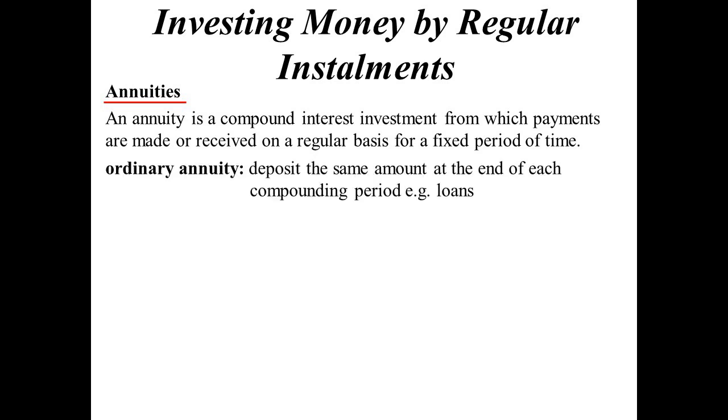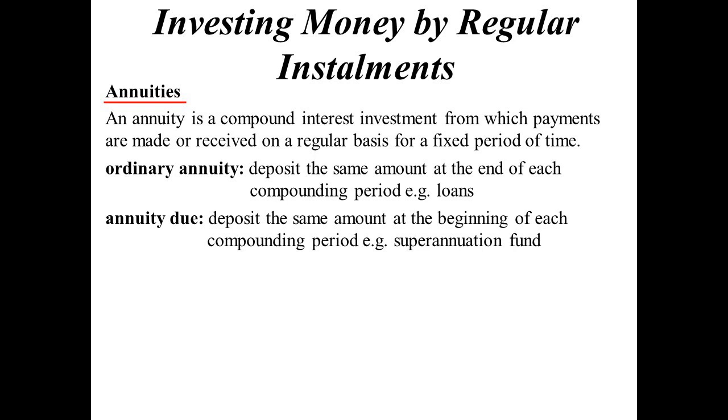There's an ordinary annuity, and that's where we deposit the same amount at the end of the compounding period. So an example of that would be a loan. And an annuity due is when you deposit the amount at the beginning of the compounding period. So that means something like a superannuation fund. So investments tend to be annuity dues, whereas loans tend to be ordinary annuities.